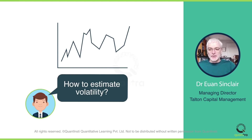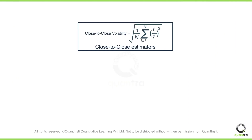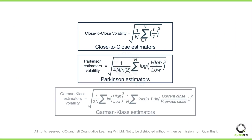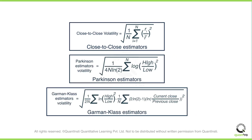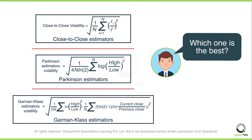In this course, you'll learn how to estimate volatility using the close-to-close, Parkinson, and Garman-Klass estimators. Now, amongst these three estimators, you can't tell which one is the best, but this course does take you through the distinguishing factors between them.